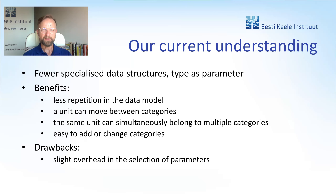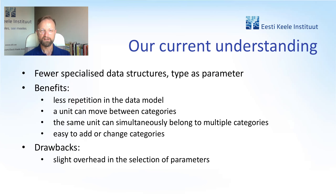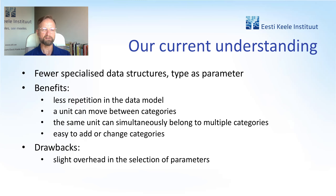So our current understanding is that we are simplifying the data model. We want to have fewer specialized data structures and use type more as a parameter. Many of our data entities already have type as a parameter. This moves closer to the ideology of the key-value store — a key-value store being the extreme of not having specialized data structures. We are far from being there yet, and I doubt if we ever get there; we will still have specialized data structures. But we are moving towards having fewer of them. The reason is to have less repetition in the data model, and to allow one particular unit to belong to more than one category, either simultaneously or move from one to the other.